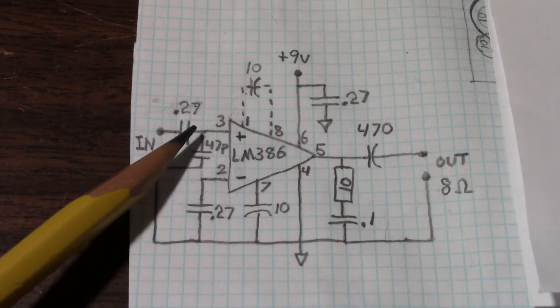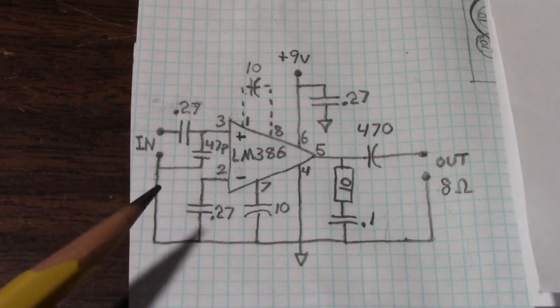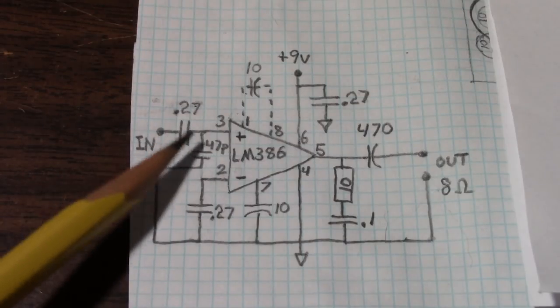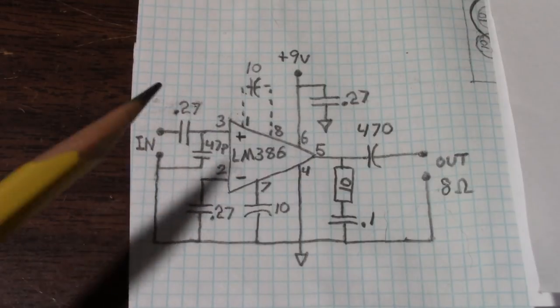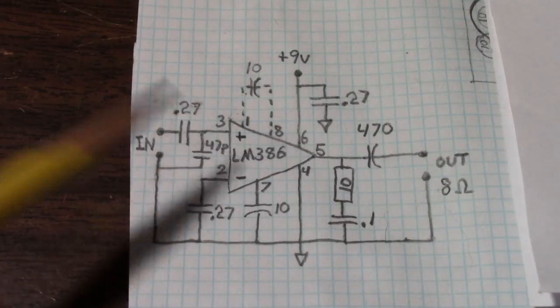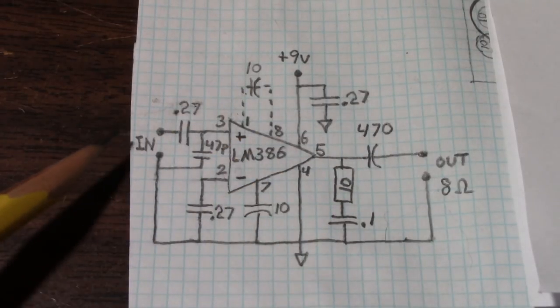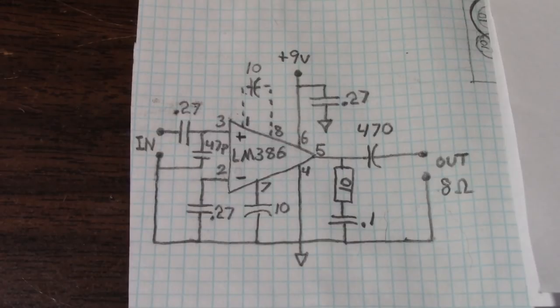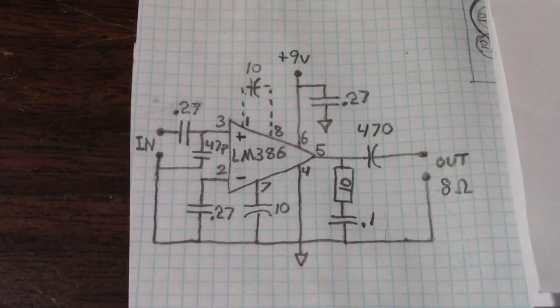The next thing I did is add a capacitor across the input, that's this 47 picofarad here. The reason for doing that, it acts as a low pass filter keeping high frequencies out of the amplifier. Usually see this used with a resistor as well but I'm not including it here. It'll do the job in the situation where you're connecting a high impedance source and the amplifier's output can couple back to the input and cause oscillation. You'll see this on hi-fi amplifiers as well. It's just really good practice to have that there.